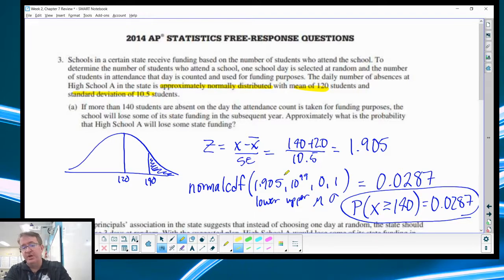So mean of 120 and standard deviation of 10.5 students. So when you go through and do that, we want higher than 140. So my Z score is going to be X minus X bar over standard deviation, 140 minus 120 over 10.5. And you get a Z score of 1.905. Now when you type that in, you can either use table A. And then make sure if you're going to end up using your calculator for it, normal CDF, and then write out what you're using. So lower, upper value, mean, and standard deviation. So I've got 1.905, 10 to the 99, 0, 1. And I get a probability of 0.0287.